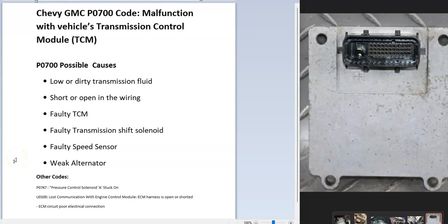Today I'm talking about a Chevy or GMC P0700 code — what it is and how you go about fixing it. The P0700 code means the onboard computer is seeing a malfunction with the vehicle's transmission control module, called the TCM. So let's go through the troubleshooting and some of the possible causes.